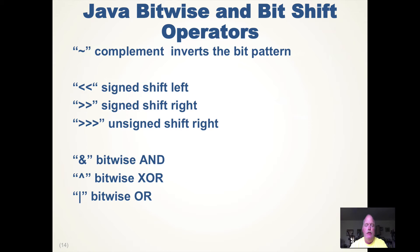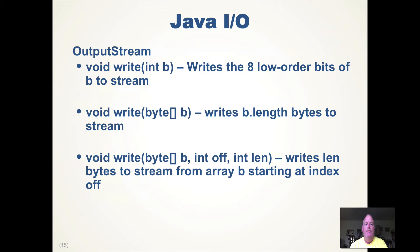Here is a summary of all the bitwise operators: complement (toggle each bit), shift left, signed shift right (keeping the sign), unsigned shift right (adding zeros), XOR, and OR. Java has these operators to manipulate binary data. Normally we would use a byte array to store binary data. For writing binary data, the OutputStream class defines a write method that writes the low-order 8 bits of an integer — it writes bytes to the stream. You can write a single byte, an array of bytes, or a portion of a byte array by specifying an offset and length.